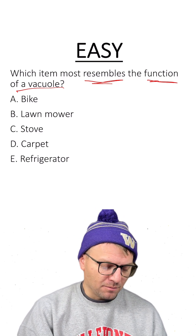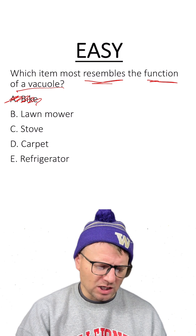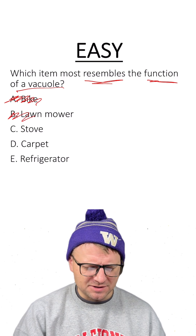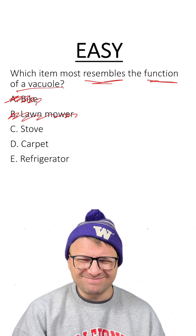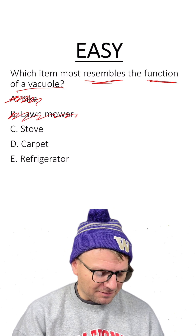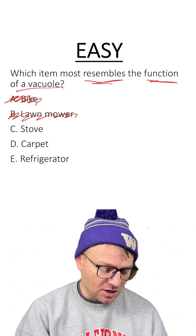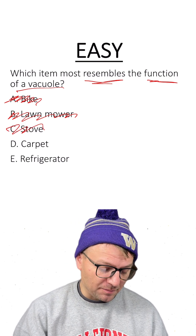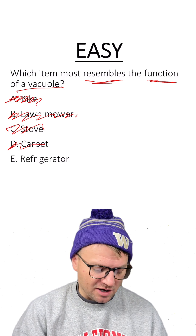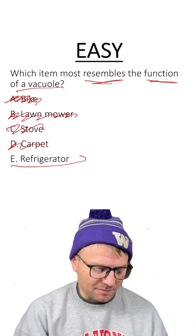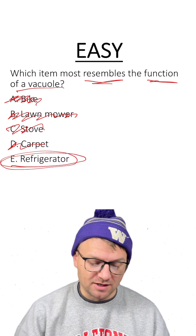If we look through our list here: bikes? No, that's for transportation. Lawnmower? No, it doesn't sound like a storage container. Stove? Not really — they're primarily used for cooking, so no. Carpet? No. And then E, refrigerator. That sounds like our best choice because it stores things.